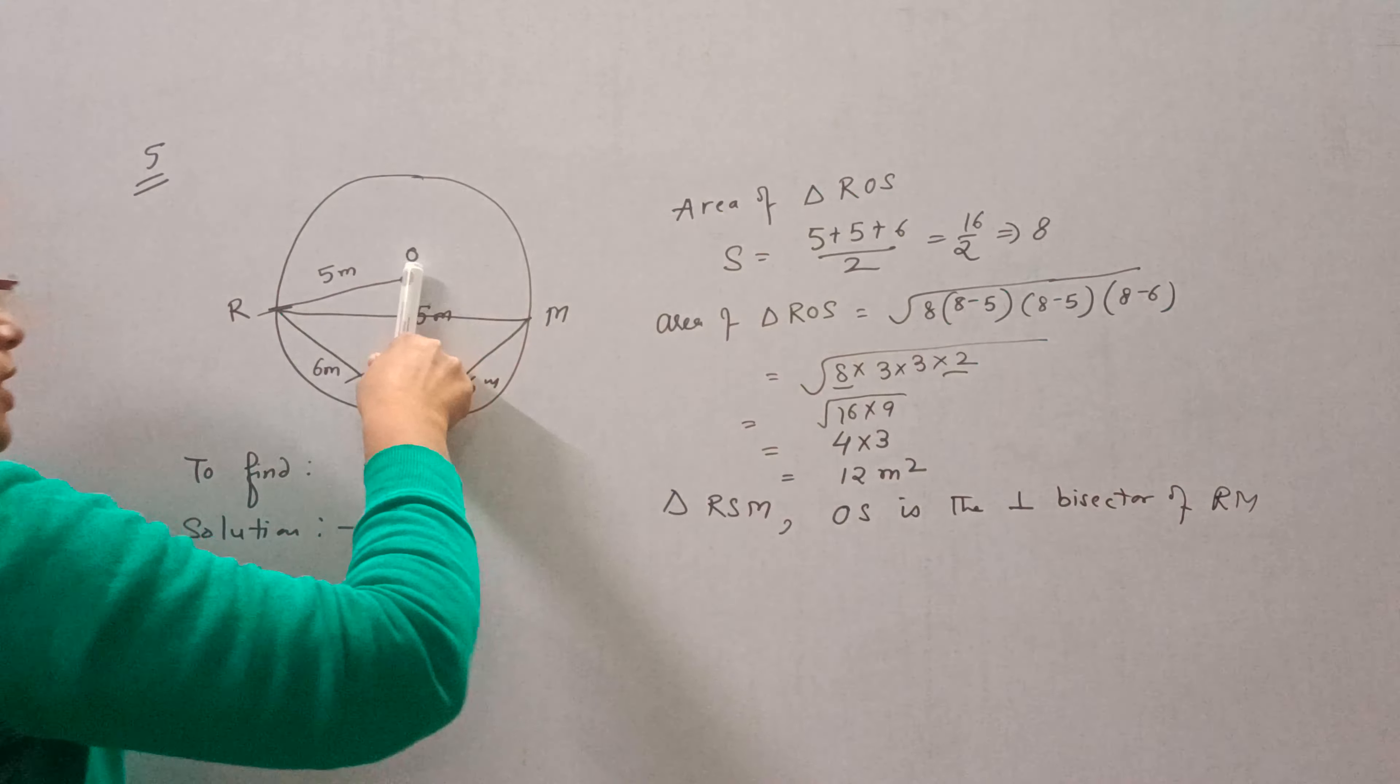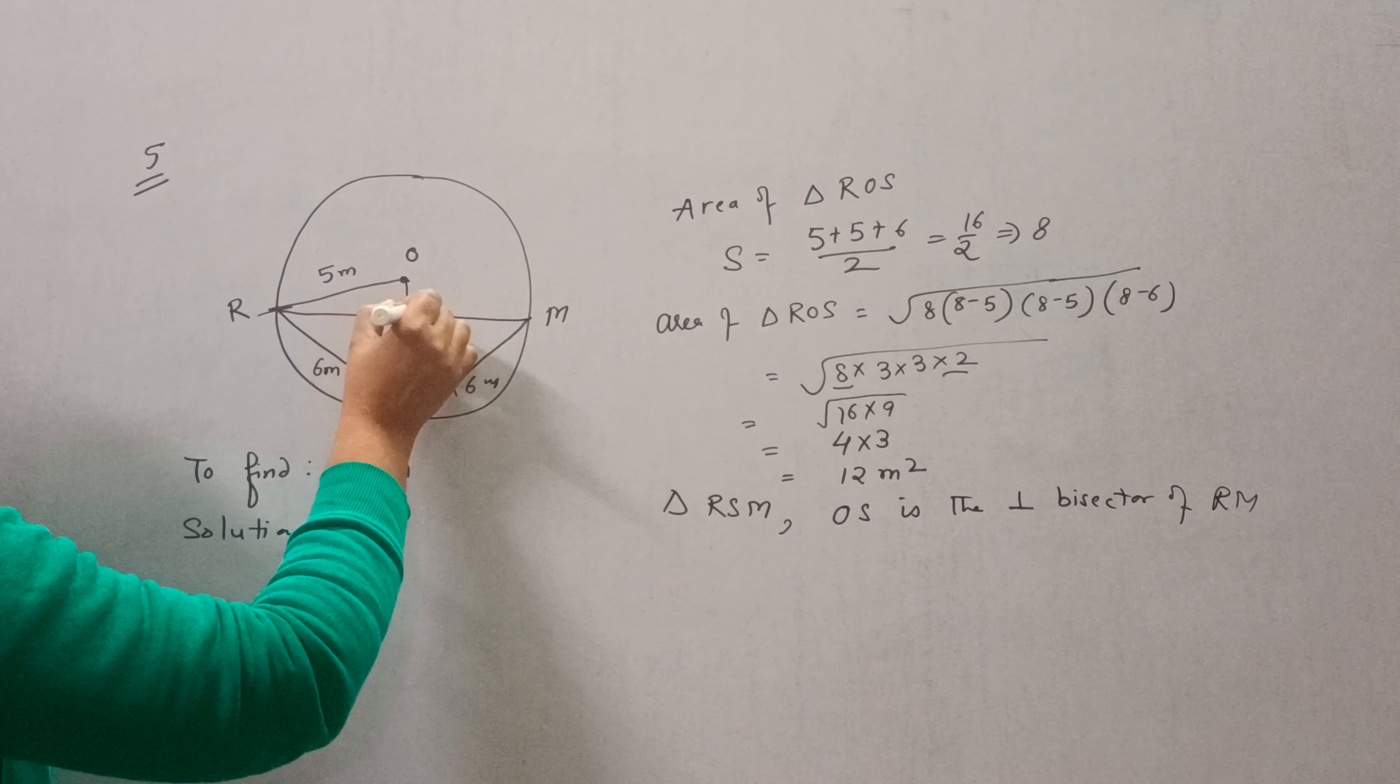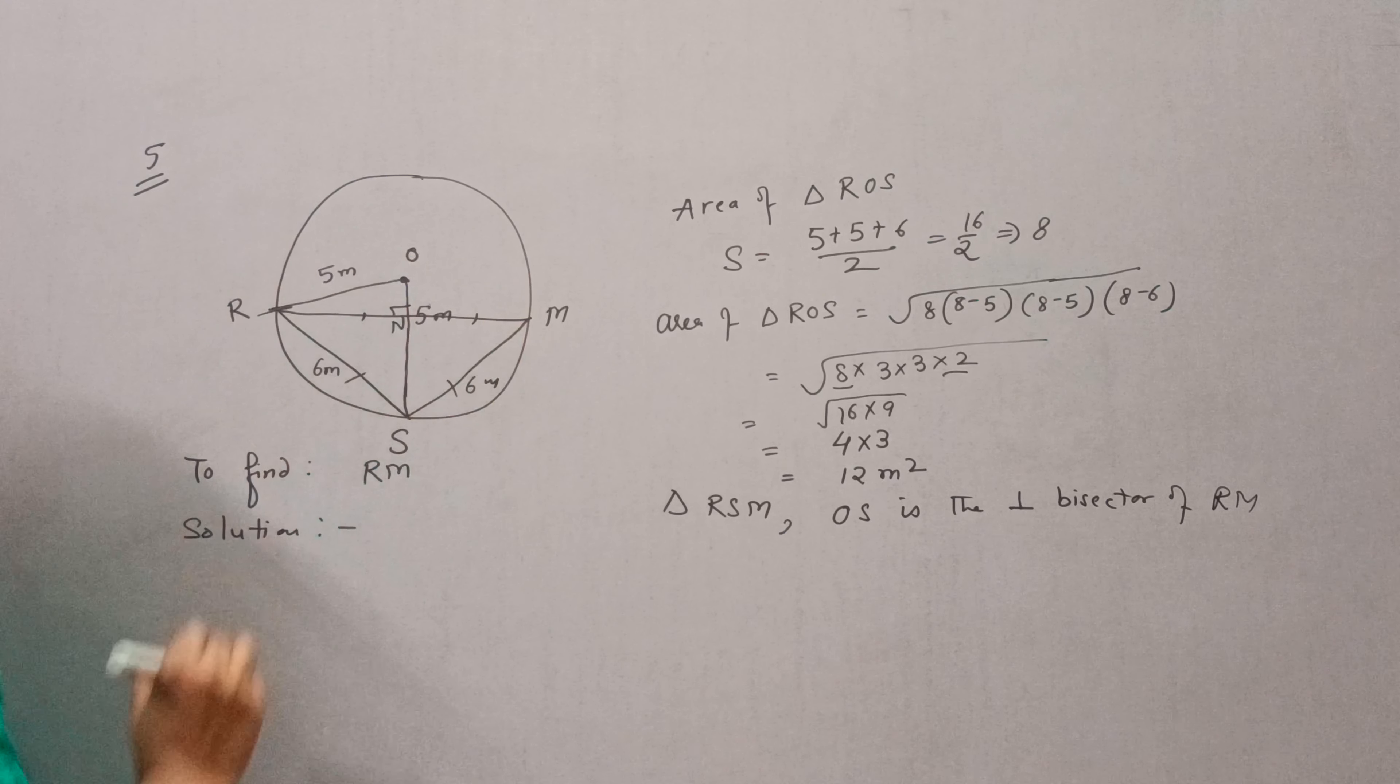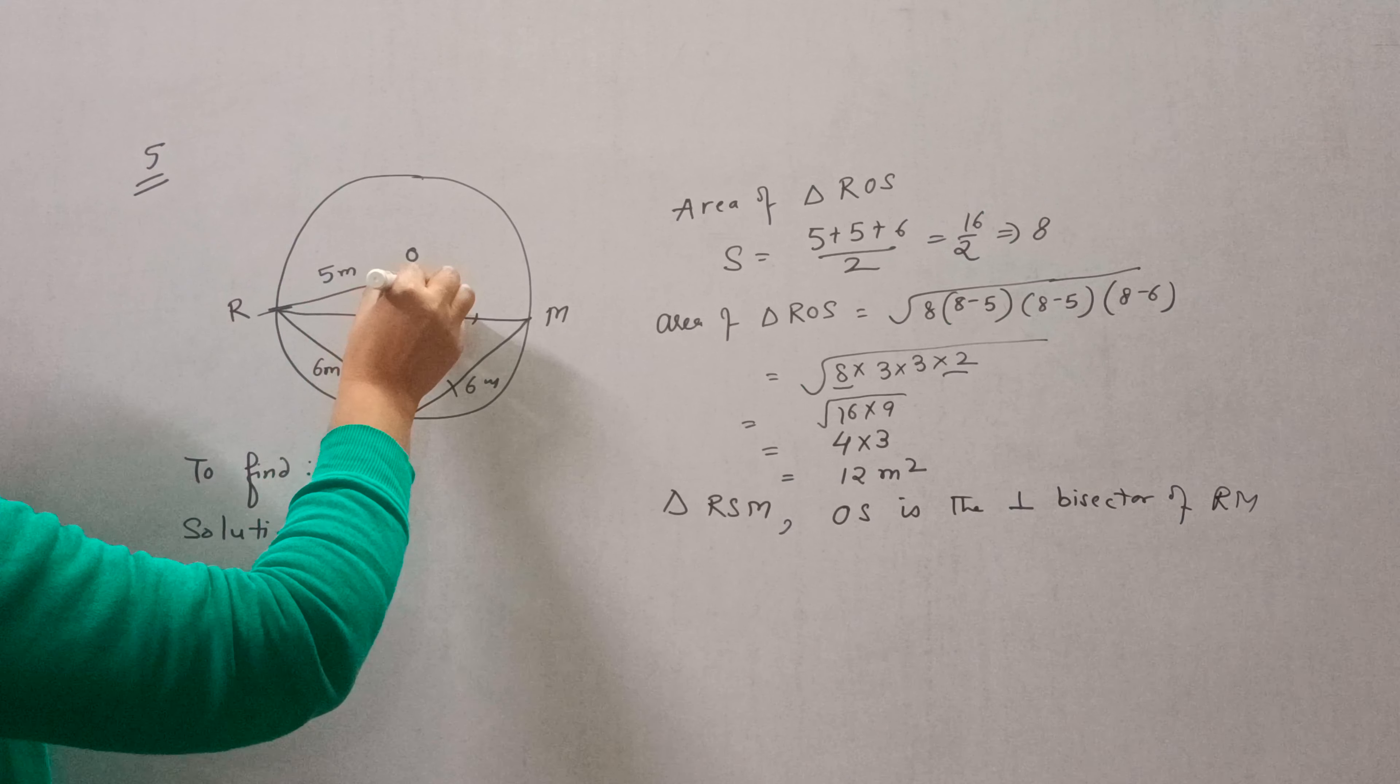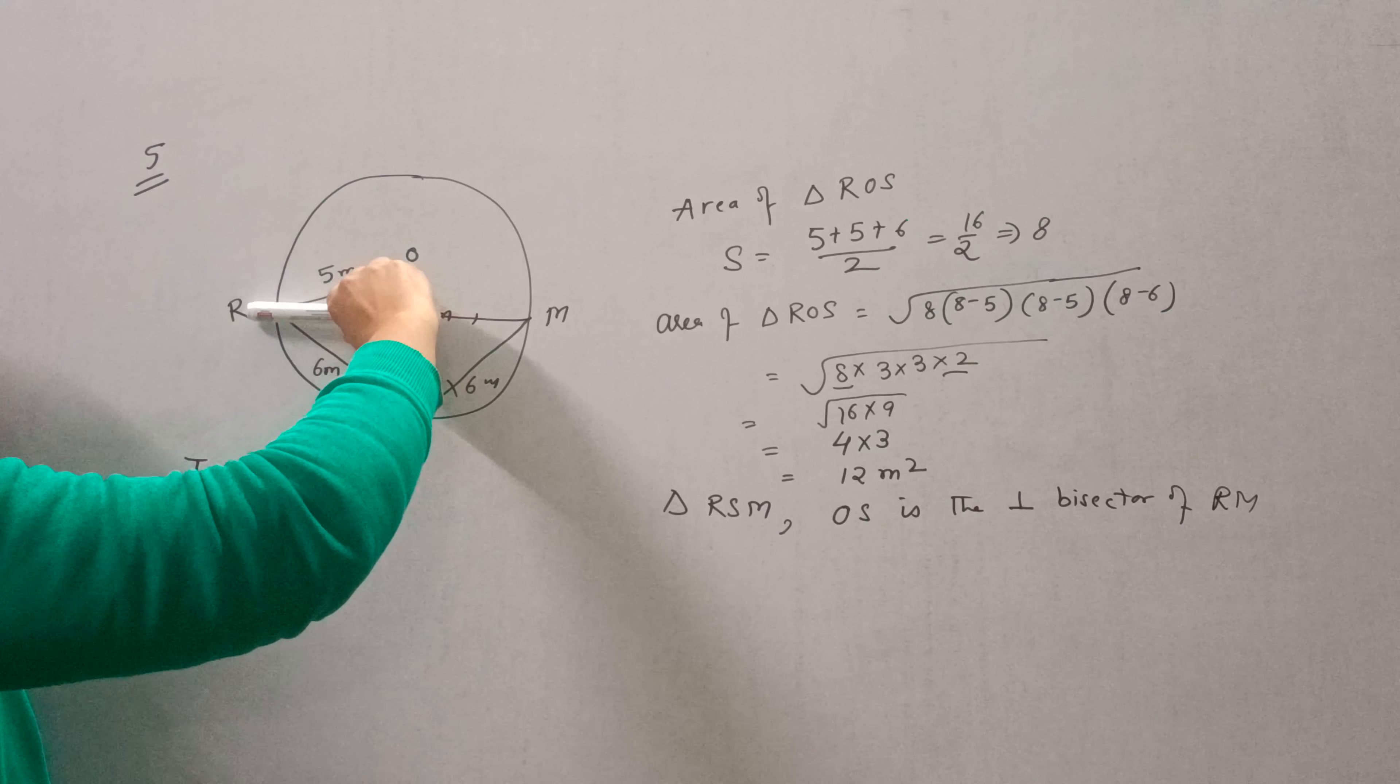OS is the perpendicular bisector of RM. That is, this angle is 90 degrees and RN is equal to NM. We can find the area of triangle ROS by the formula 1/2 base times height.